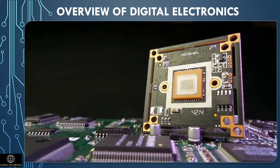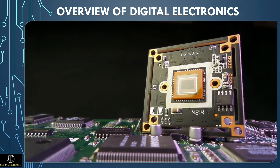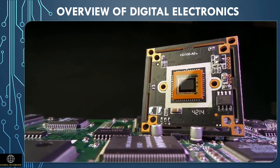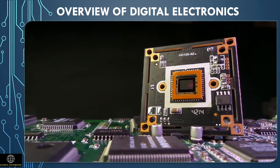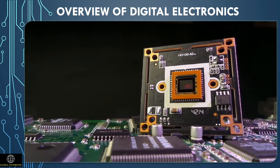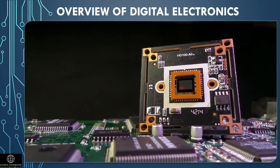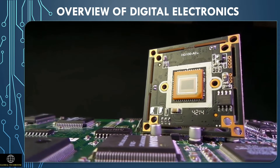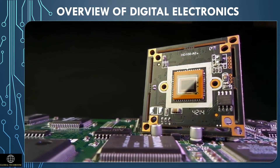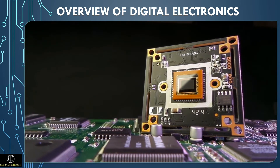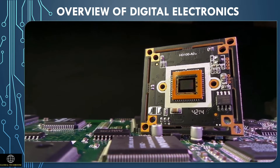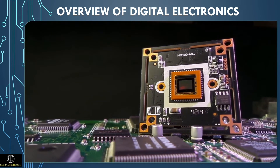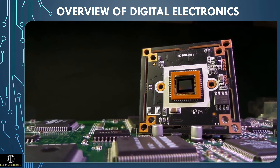In digital electronic circuits, it represents one when the voltage of the circuit is high. That means the on state of the device — it is getting positive and appropriate supply voltage. In digital electronic circuits, it represents zero when the voltage of the circuit is low. That means the off state of the device — it is getting zero or almost zero voltage.